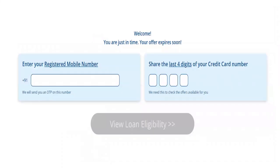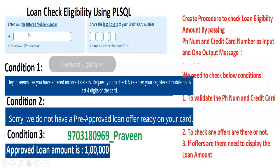The requirement is: on my credit card, how much loan eligibility is there? For this we need two input parameters — the registered mobile number and the last four digits of the credit card number. We need to do some validations whether details are there or not, whether offers are there. The output will be a message indicating whether details are correct, and the loan amount if a loan offer exists.